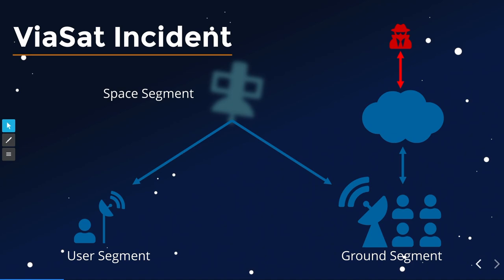In the Viasat incident, attackers came from the internet, compromised ground station services exposed to the internet, took over parts of the ground station system, and then distributed malware to the user segments. The satellite itself was pretty much irrelevant — it acted as a dumb pipe, just rebroadcasting traffic at a slightly different frequency, since uplink and downlink frequencies differ. The attack would have been basically the same if there had been a cable instead of a satellite.